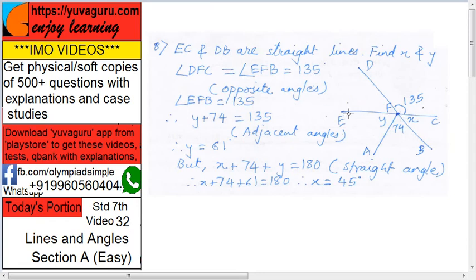But what is EFB? There are two adjacent angles in it. So EFA plus AFB equals EFB because these two are adjacent angles. Adjacent angles have a common side. So EFB equals Y plus 74, which equals 135. Take 74 to the other side, you get Y equals 61.